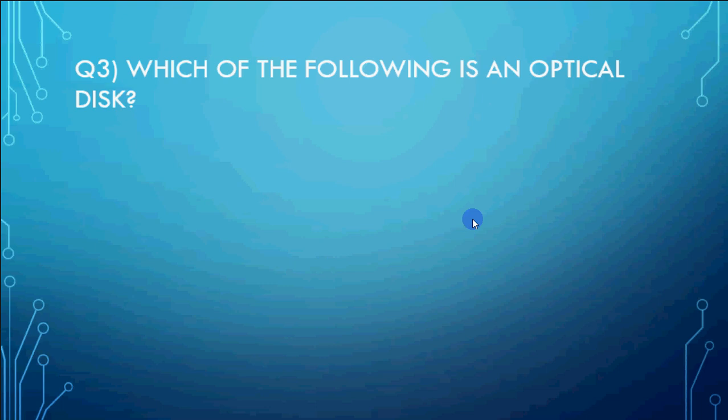Which of the following is an optical disk? So it's a very easy question. Memory disk, magnetic disk, hard disk and then DVD. Memory disk, magnetic disk and hard disk are magnetic storage. So the DVD is digital versatile disk. That's the answer for optical disk.